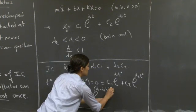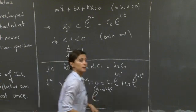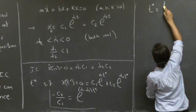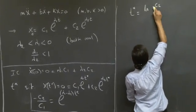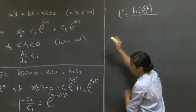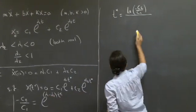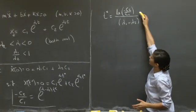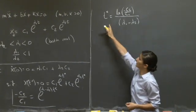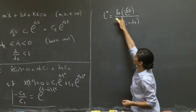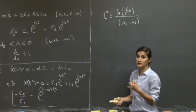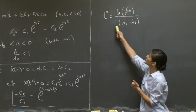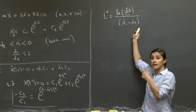Now we find t-star by taking the log of both sides. We get t-star equals the log of (minus C2 over C1), divided by (lambda-1 minus lambda-2). This tells us that if t-star exists — meaning if the log is defined and minus C2 over C1 is positive — then there is only one possible value of t-star.